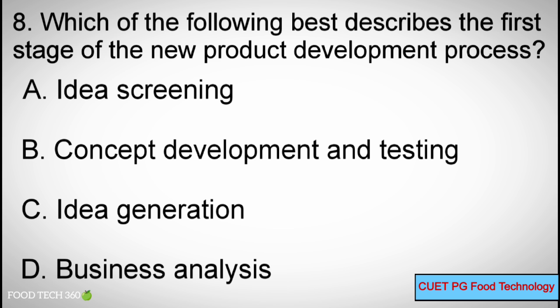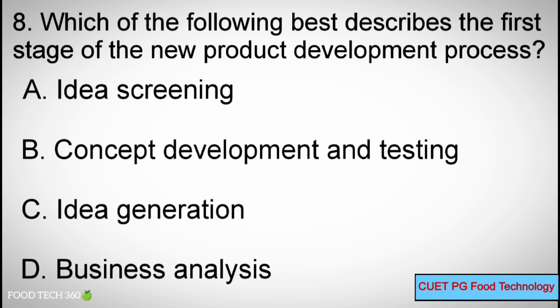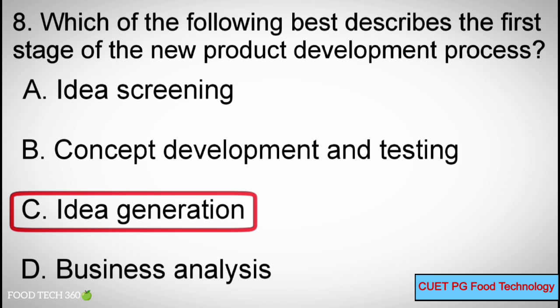Q8: Which of the following best describes the first stage of the new product development process? A. Idea screening, B. Concept development and testing, C. Idea generation, D. Business analysis. Correct answer: C. Idea generation.